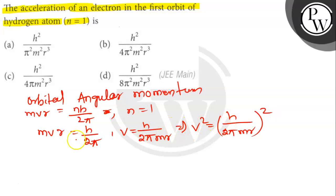We are squaring both sides. Since acceleration a equals v² by r, we get a equals h² by 4π²m²r³.